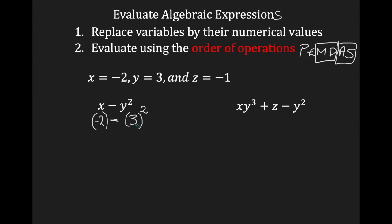After you've done that, algebra is over. We're now going to apply order of operations. Do we have any parentheses? No. Do we have any exponents? Yes — we have 3 squared. We're going to evaluate that. 3 squared is 9. So I have negative 2 take away 9. Negative 2 take away 9 is negative 11. And that's our answer.